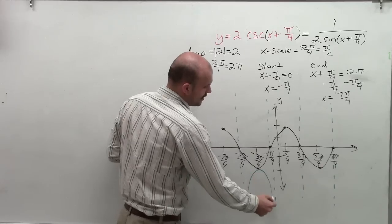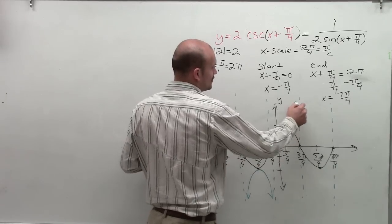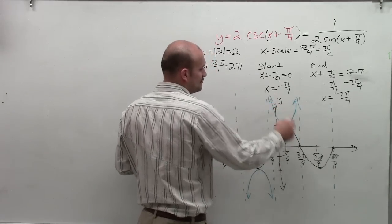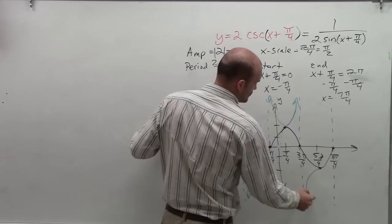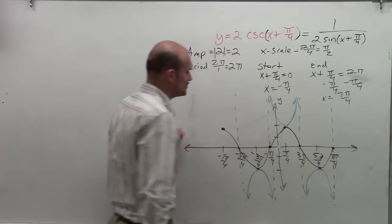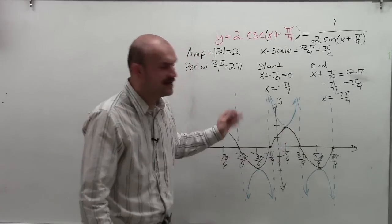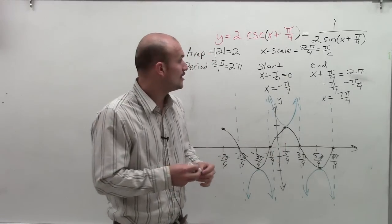And then the end behavior of your cosecant graph is going to kind of look like a parabola approaching both of your asymptotes. So my graph is just going to continue with this pattern at every max and min of the graph.